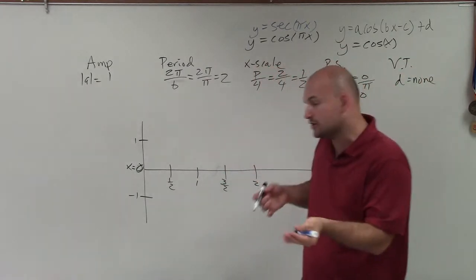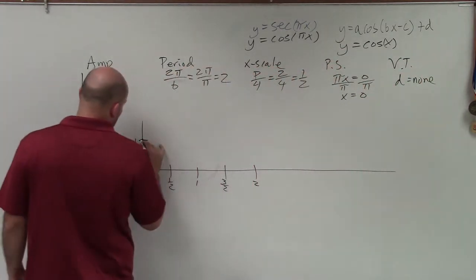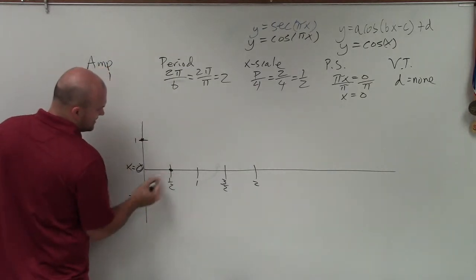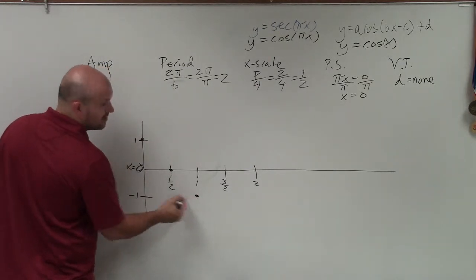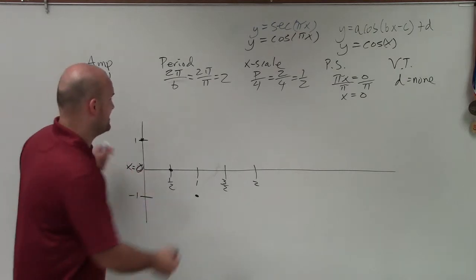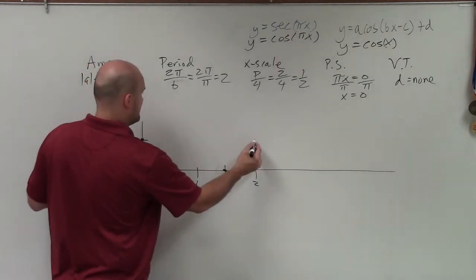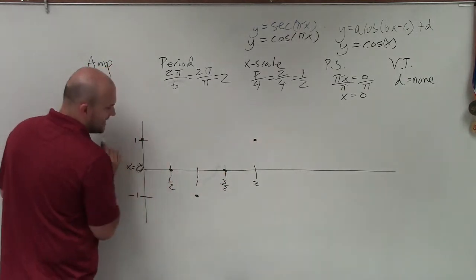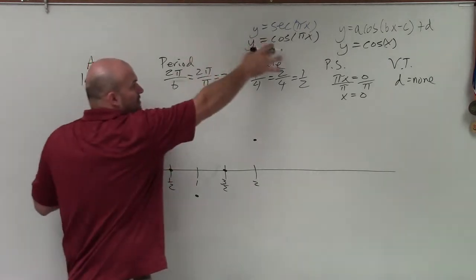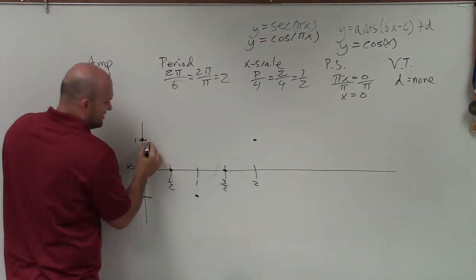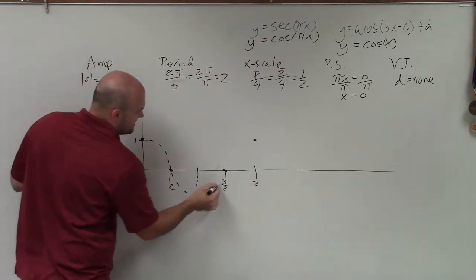Then at the next x scale, it goes to its intercept, then down to the minimum, then it goes back to an intercept, and then back up to the maximum point. So now by connecting these, now again, we're graphing cosine. We actually want to graph secant, so I'm just going to dash these.